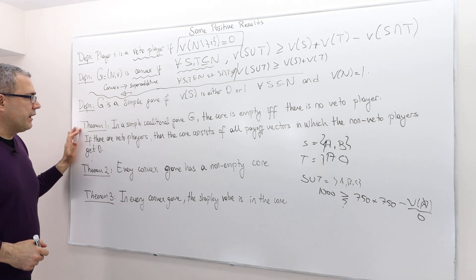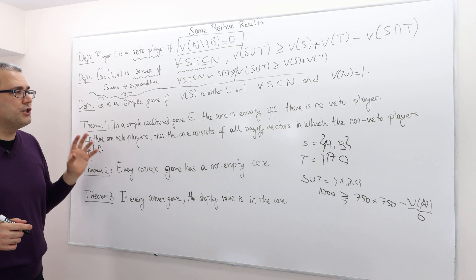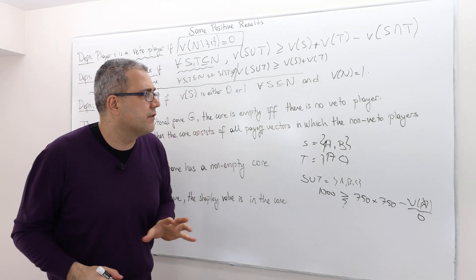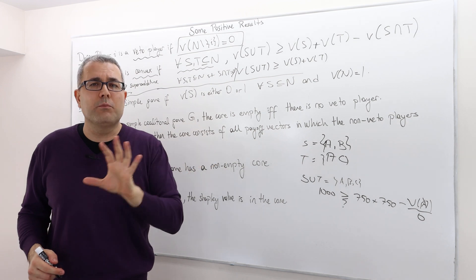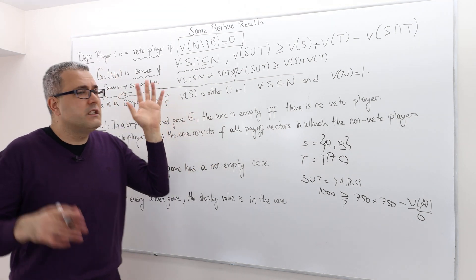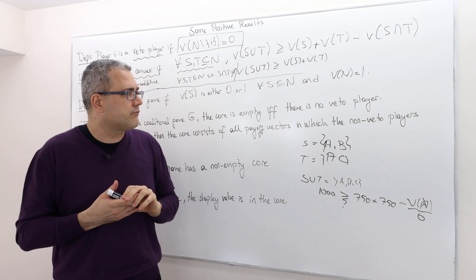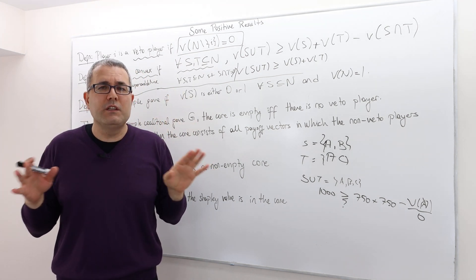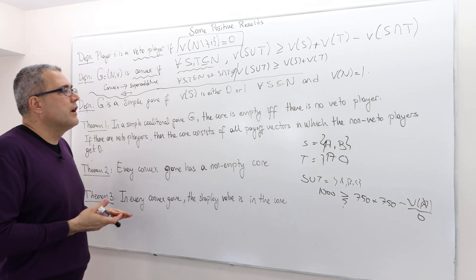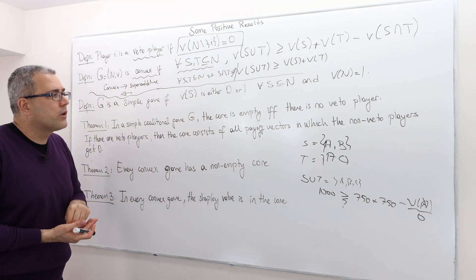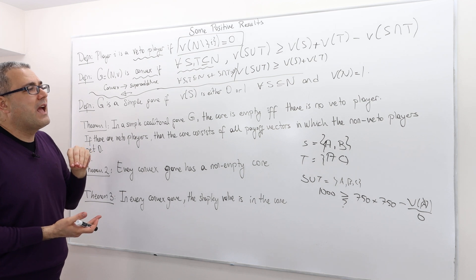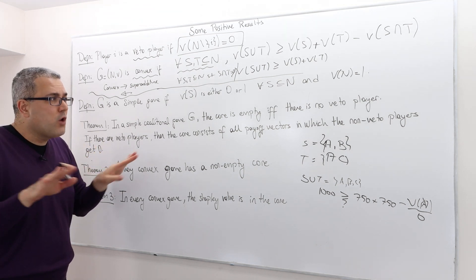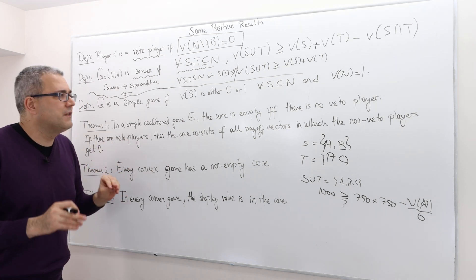Okay. So the first theorem, in a simple coalitional game G, the core is empty if and only if there is no veto player. So if you have 0-1 type of game, okay, a simple game, and if there's no veto player, well, then you can be sure that the core is empty. All right? Once again, if there's no veto player, well, then the core is empty.